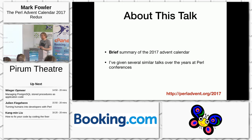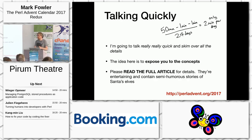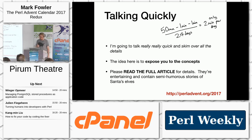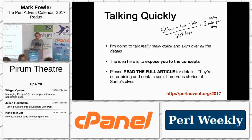So, what is this talk? This talk is a brief summary of the 2017 Advent Calendar. I've given several similar talks over the years at Pearl Conferences, and they have one thing in common: they mean that I have to talk very, very quickly. I've got 24 days to talk about. I've been speaking for 1 minute and 56 seconds so far, which gives me about 2 minutes to talk about each day. So, the idea here is to expose you to the concepts in the Pearl Advent Calendar, and if you want to know more — and you probably will — then go read the full article, which is available at perladvent.org 2017. I'm running out of time, so I'm going to jump straight in.